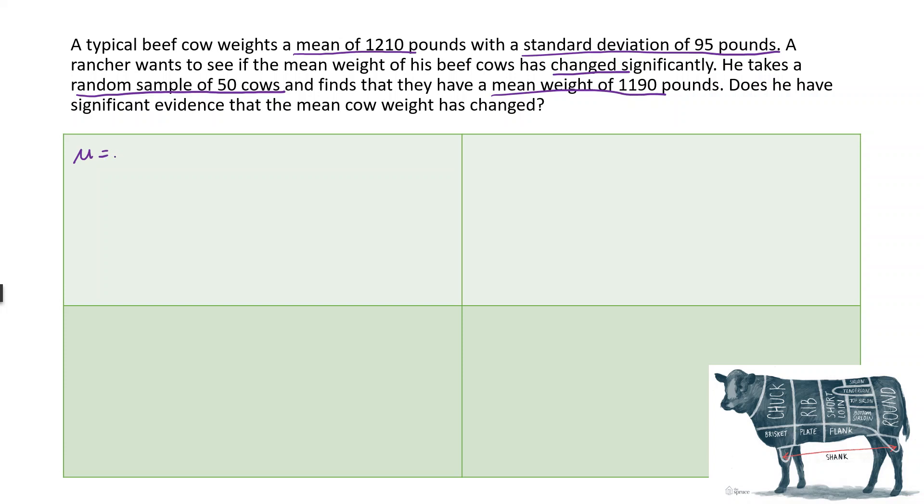In our first box, we're going to define our mu. Mu for cows. It's the true mean weight of a cow. I guess it would be an adult cow that's ready to become steak. Our null hypothesis is that the mean equals 1,210 pounds. Our alternative hypothesis, we looked for change significantly. So we'll say our mean does not equal 1,210. And we're going to write down any other information we have. So we have that the standard deviation is 95. We have that we are selecting 50 cows. So that's our N. We have the sample mean of those 50 cows was 1,190. And we're going to use an alpha of 0.05.